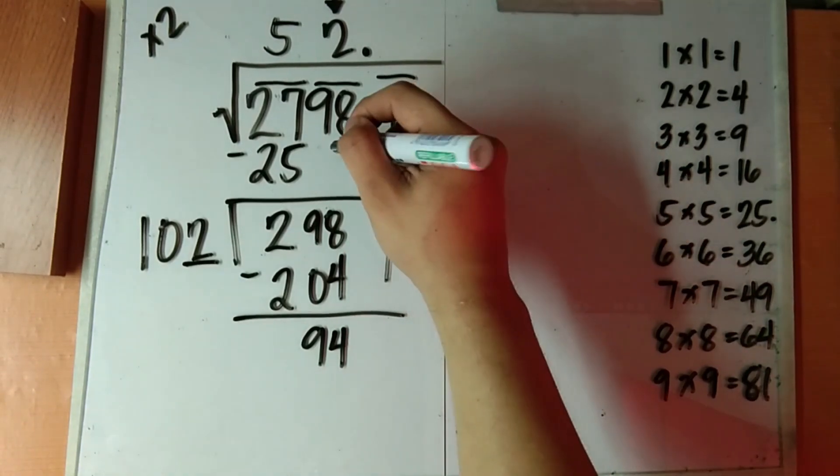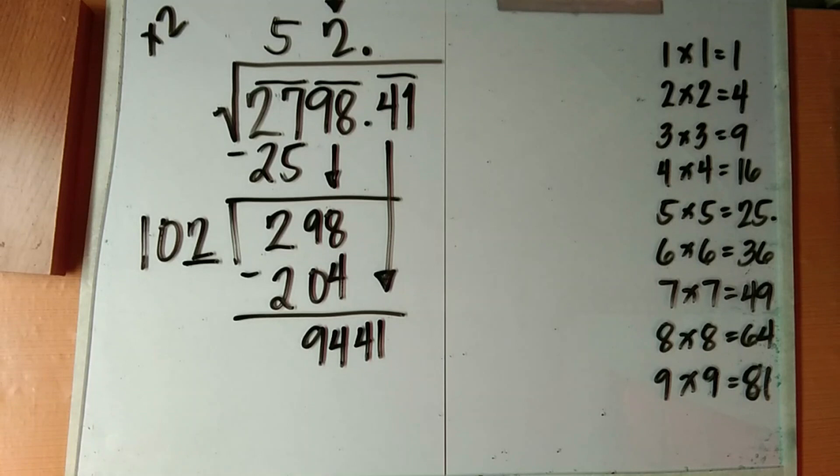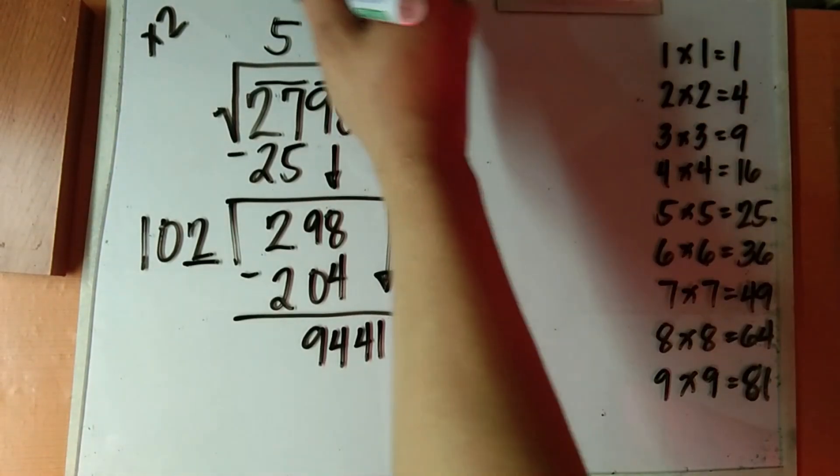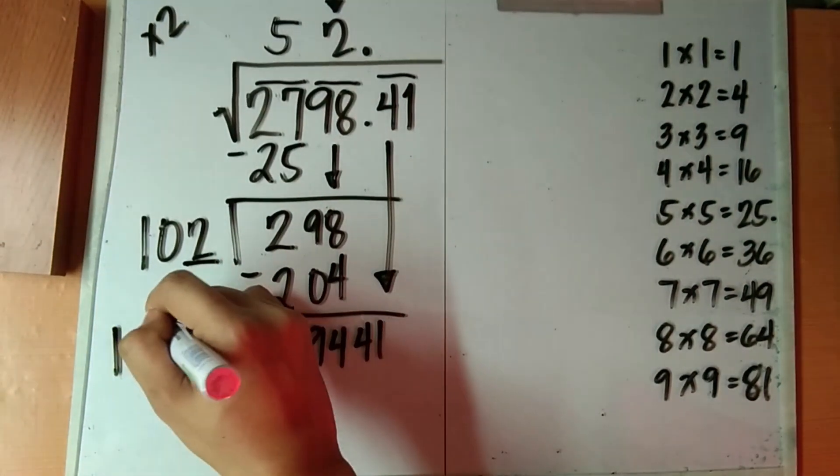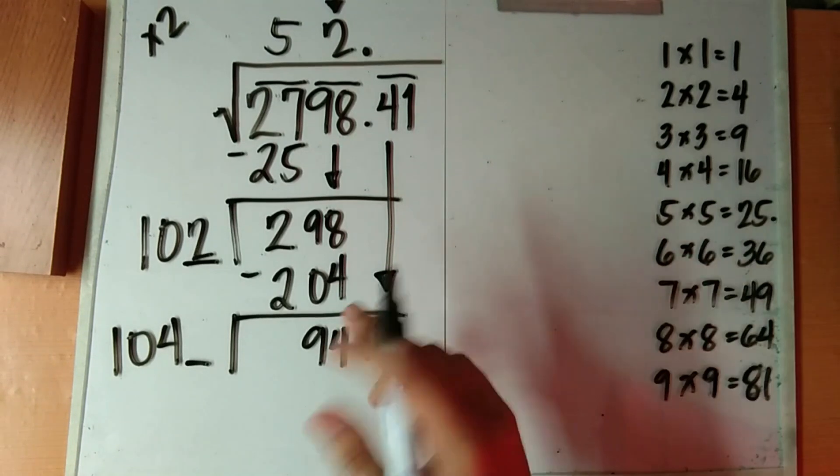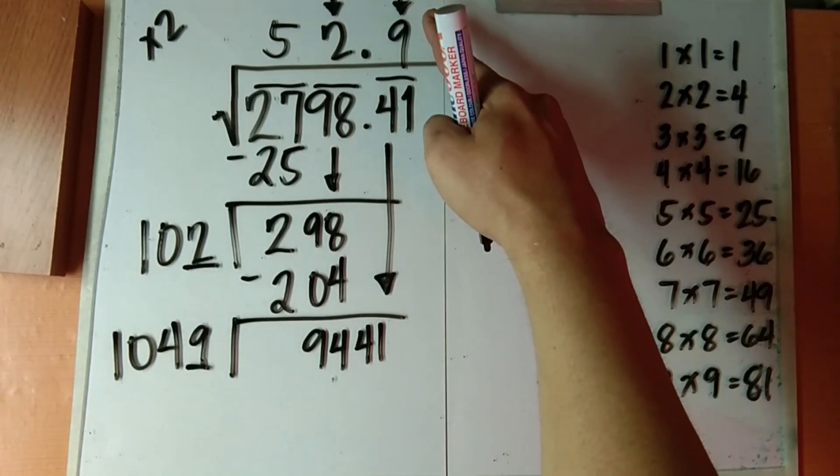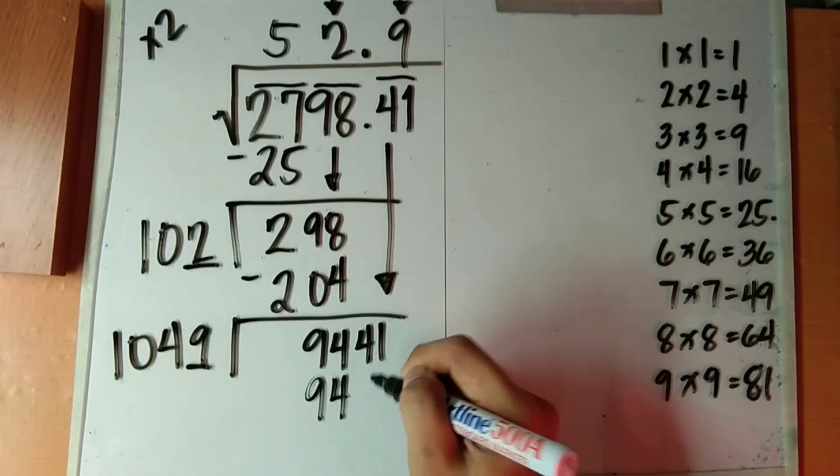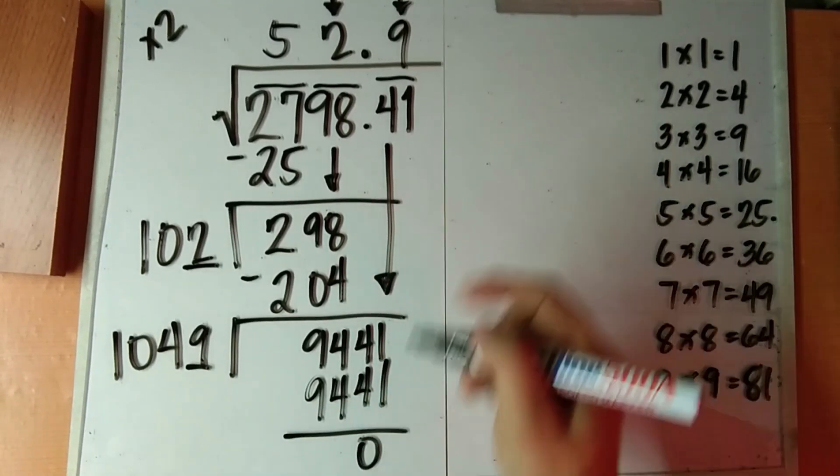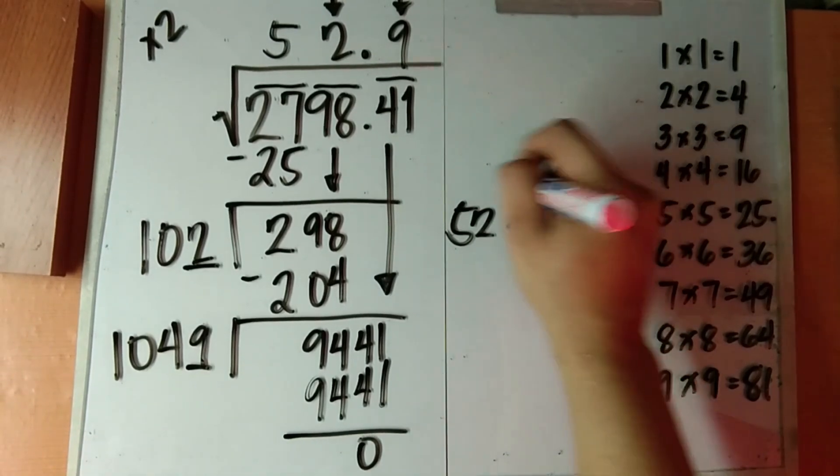Repeat the same process earlier. Bring down the next number, which is 41. Now you have 9,441. Repeat the process. Multiply 52 by 2. That would be equal to 104. Leave a blank for our unit's value. Now estimate. How many 1,040 plus are there in 9,441? Now if your answer is 9, probably you are correct. 9 and 9. Now the product obtained when multiplying 9 by 1,049 is 9,441. So in this case, the square root of 2,798 and 41 hundredths is 52 and 9 tenths.